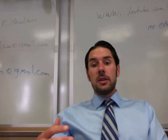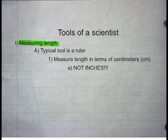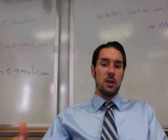Today we're going to be looking at the tools a scientist uses when measuring organisms. The first tool we're going to look at is the one used in measuring length. The typical tool is a ruler, and we measure in terms of centimeters, not inches.